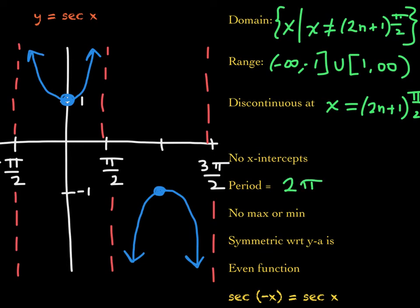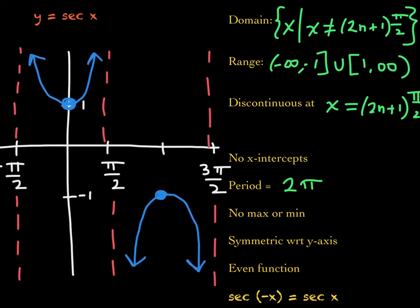There is no maximum and no minimum because these graphs go infinitely high and infinitely low. This graph is symmetric with respect to the y-axis — the branch is mirrored across the y-axis. That means secant is an even function, so secant of negative x equals secant of x. Secant is even just like its reciprocal, cosine, which is also even.